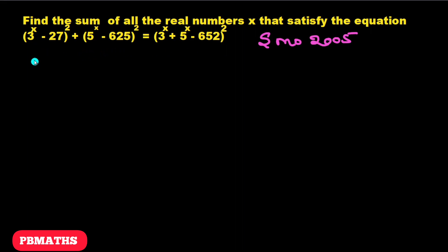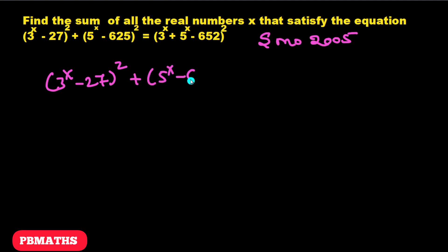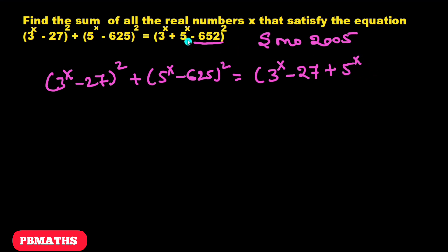To solve this problem, let's write the left hand side as it is: (3^x − 27)² + (5^x − 625)² equals the right hand side. We can split −652 as −27 − 625, giving us (3^x − 27 + 5^x − 625)² on the right hand side, since −27 minus 625 gives us −652.